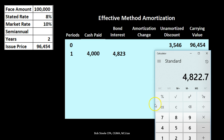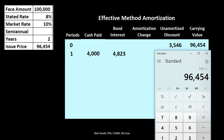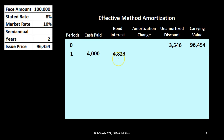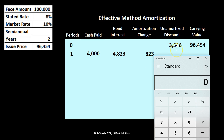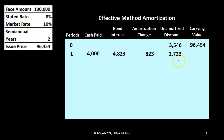We're rounding here. The difference between the bond interest of $4,823 and the cash paid of $4,000 is $823. The unamortized discount of $3,546 goes down by $823, giving us $2,723. The new carrying amount is always the $100,000 face amount minus the unamortized discount of $2,723.